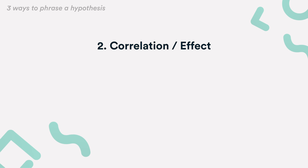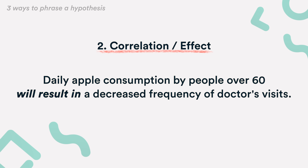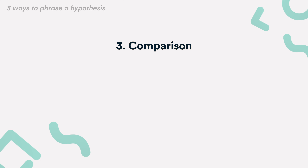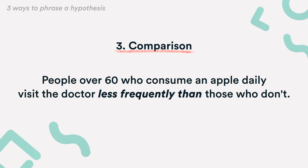The second way is to phrase the hypothesis in terms of a correlation or effect. For example: daily apple consumption in over 60s will result in a decreased frequency of doctor's visits. The third way is by comparing two groups: people over 60 who consume an apple daily visit the doctor less frequently than those who don't.